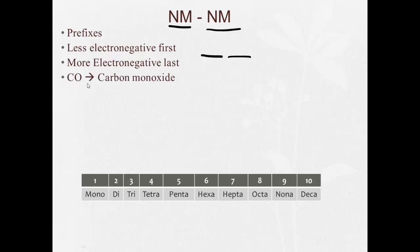Now we don't say generally monocarbon. With the first one we can get away with just saying carbon. But for the second one we have to say monoxide. And it just gets kind of shortened to monoxide. So CO is carbon monoxide.